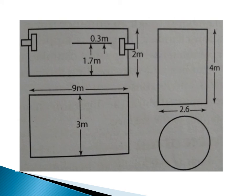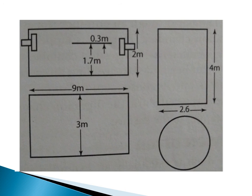In the figure, the length of the tank is 9 meters, the width is 3 meters. The bottom depth is 1.7 meters and the freeboard is 0.3 meters, giving a total depth of 2 meters. The diameter of the soak pit is 2.6 meters, and the depth of the soak pit is 4 meters. All dimensions are marked in the sketch.